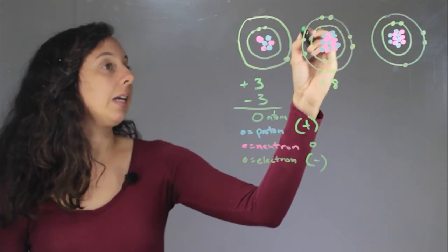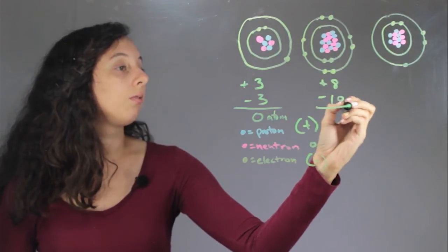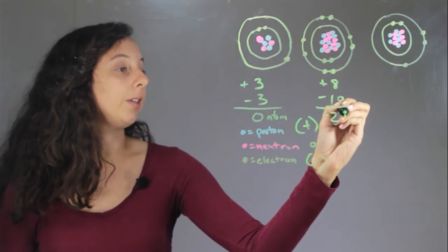five, six, seven, eight, nine, ten. So negative ten. So our overall charge is negative two. This is definitely an ion.